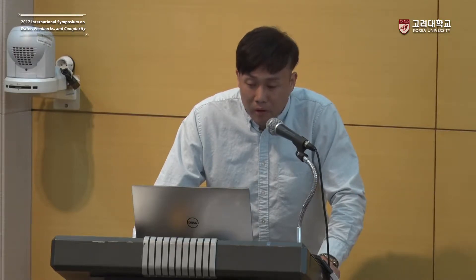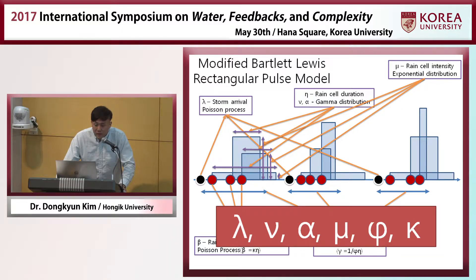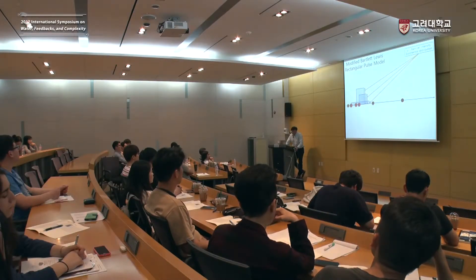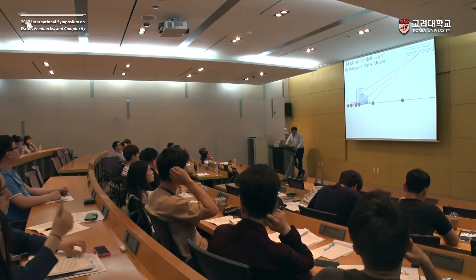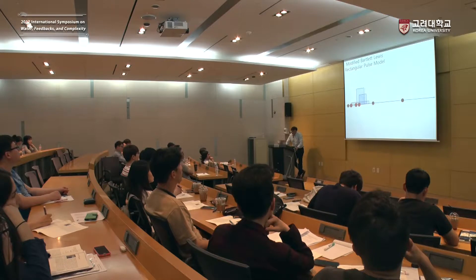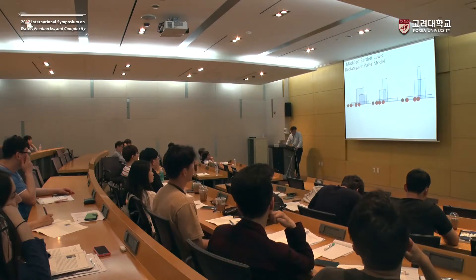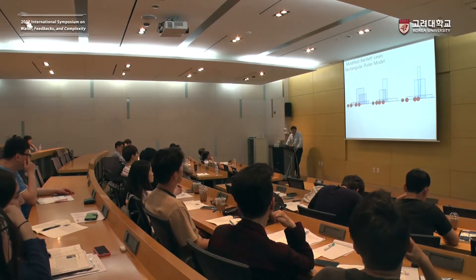The duration of each rain cell is determined as follows: we first randomly draw a number from a two-parameter gamma distribution, and that number becomes the parameter of an exponential distribution, from which we randomly draw the rain cell duration. Rain cell intensity is randomly drawn from an exponential distribution. For each storm, we repeat the rain cell arrivals with random depth and random duration to generate the rainfall.